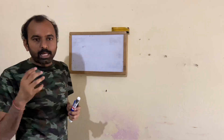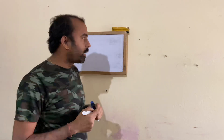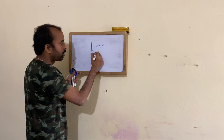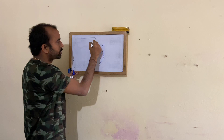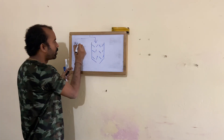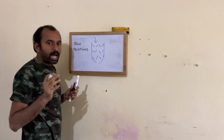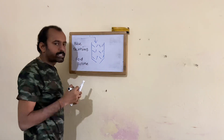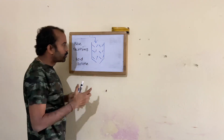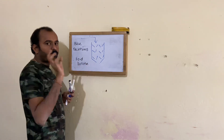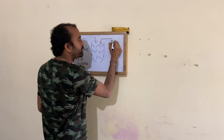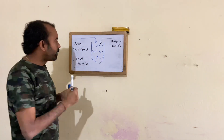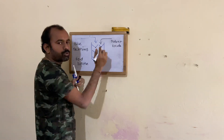To identify the retention volume and void volume of gel permeation chromatography, you take a packed column and pass blue dextrans through it. Blue dextrans are large in size, so they cannot enter the pores and elute through the voids first — this gives you the void volume. Next, you pass deuterium oxide through the column; being smaller, it passes through all the pores and gives you the retention volume.